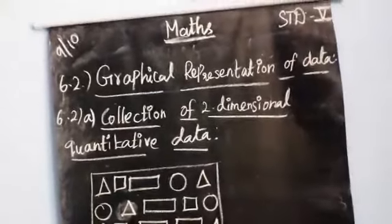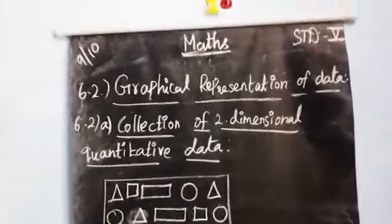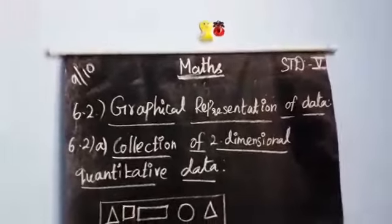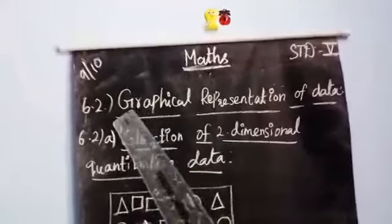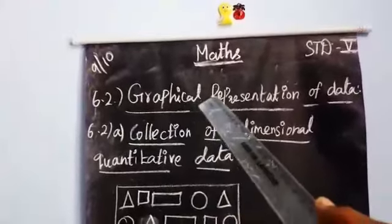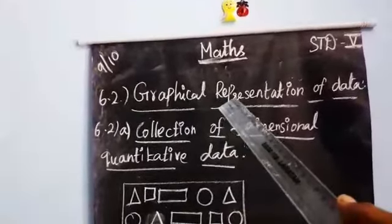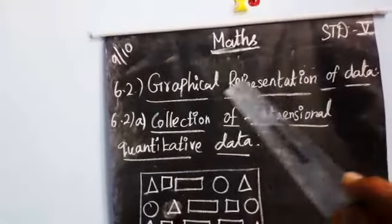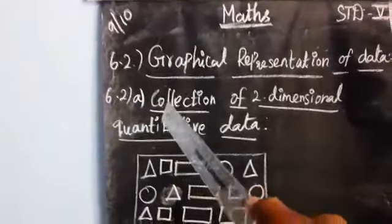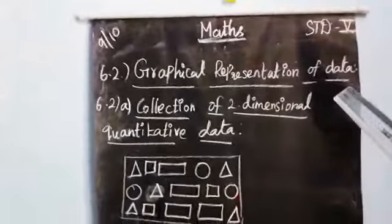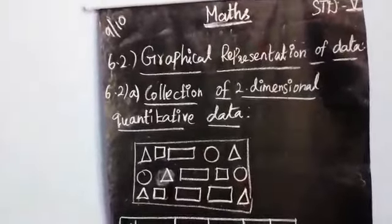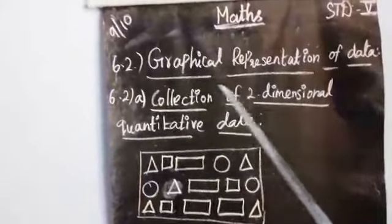Students, in the previous class you studied Unit 6 on information processing. Today we are continuing with section 6.2: graphical representation of data. Under 6.2a, there are four types of graphical representation: first, graphical method; second, pictograph; third, tally marks; and fourth, bar graph.